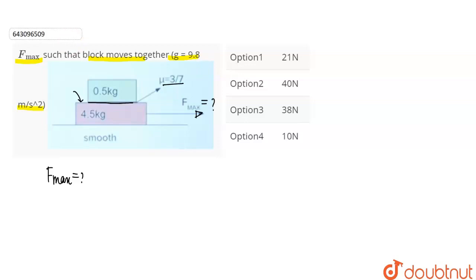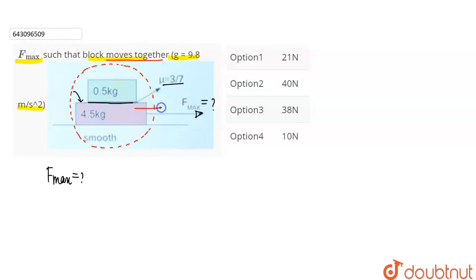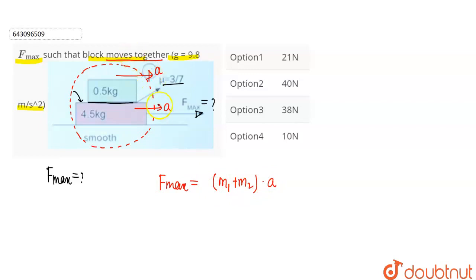So this is the two-block system. If we have the two-block system, we start with finding the common acceleration. The question states that the block moves together, which makes it straightforward. Moves together means there is no relative motion between the two blocks — it means they have the same acceleration. So to calculate maximum force, we find the common acceleration first, since both bodies have the same acceleration when moving together.